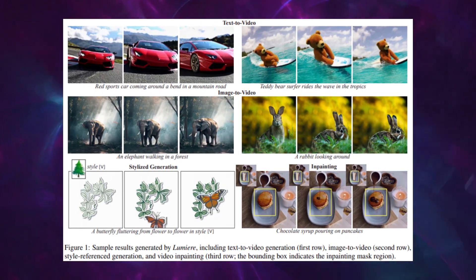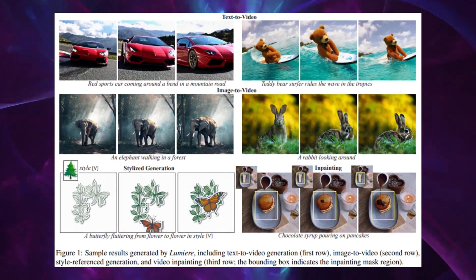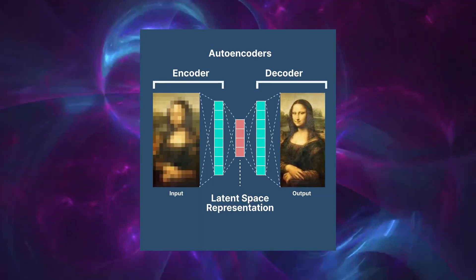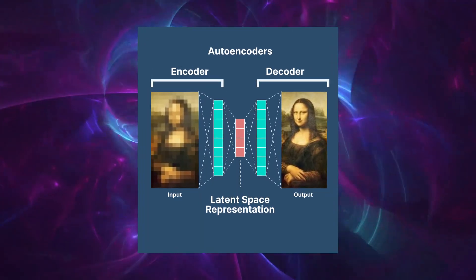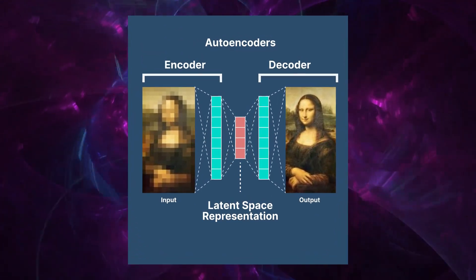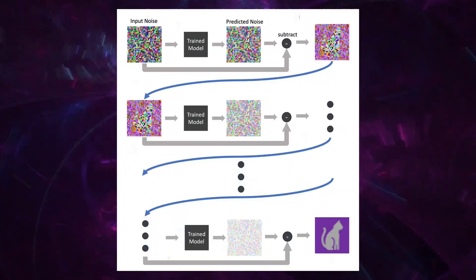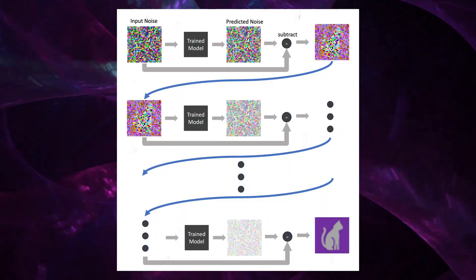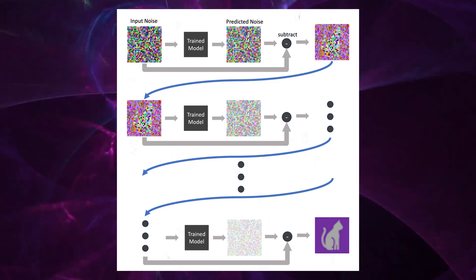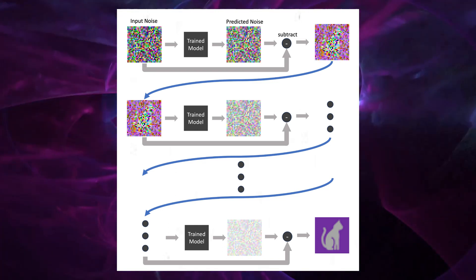The text-to-video diffusion model is a sophisticated AI technique designed to convert textual descriptions into video content. It starts with a process of adding noise to a series of images and then learning to reverse this process, generating clear images from the noisy input. This method is iterative, meaning it refines the images step by step, gradually removing the noise and improving clarity until it achieves a coherent and realistic video sequence.